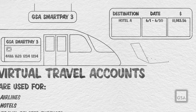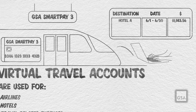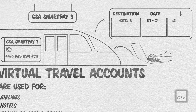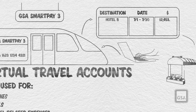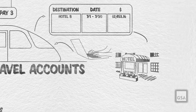For example, a traveler books a reservation through their agency's travel management system and a virtual account number is assigned and authorized. The virtual account dynamically adjusts the spend limit on the account in real time to match the approved booking amount.